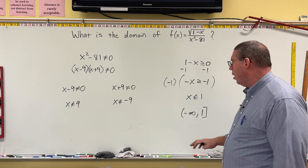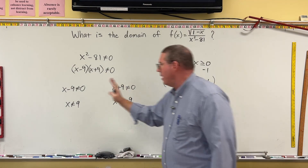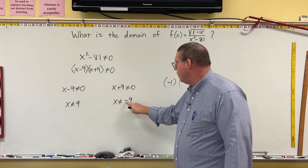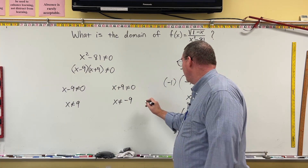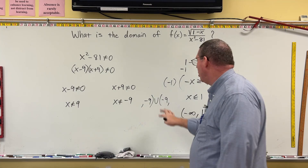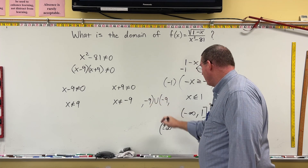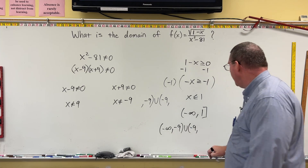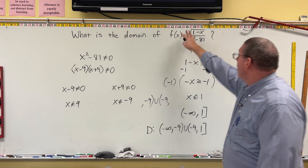Now we check whether 9 and negative 9 are on this interval from negative infinity to 1. Negative 9 is on this interval — it's between negative infinity and 1. But 9 is not, because 9 is larger than 1. So we only have to remove negative 9. We write negative infinity, comma, negative 9, parenthesis, union, parenthesis, negative 9, comma, then 1 with a bracket. That is the domain of f(x).